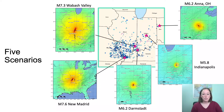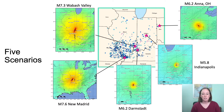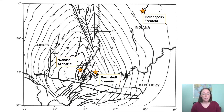For this study we looked at five deterministic scenarios. We selected a magnitude 7.6 in New Madrid and a magnitude 7.3 in Wabash Valley, as well as some moderate earthquakes near population centers in Indiana: a magnitude 6.2 in Darmstadt, Indiana (just north of Evansville), a magnitude 5.8 southeast of Indianapolis, and a magnitude 6.2 in Anna, Ohio, near the Anna seismic zone just east of the Indiana-Ohio border. The Wabash Valley and New Madrid events were based on historical seismicity with better-constrained faults, while Darmstadt and Indianapolis were placed near mapped but more poorly-constrained faults.